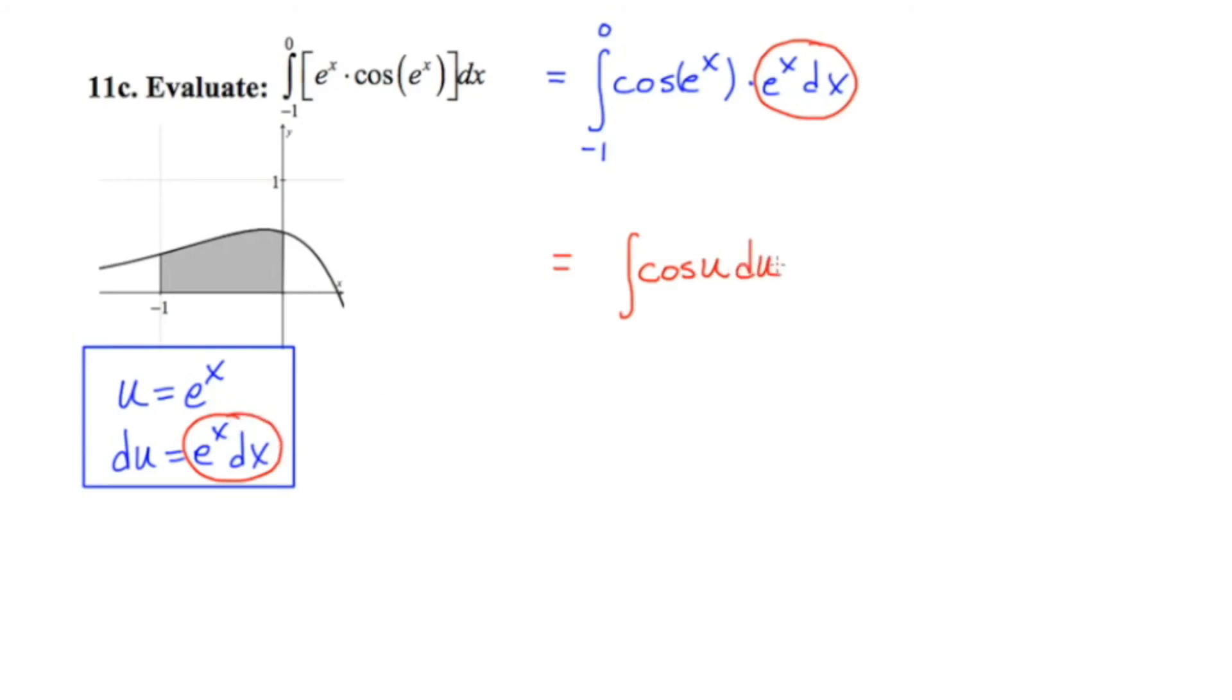And of course we have to change our limits of integration, and we're going to plug that in for the x over here. So negative one becomes e to the negative one, and e to the zero is just one.